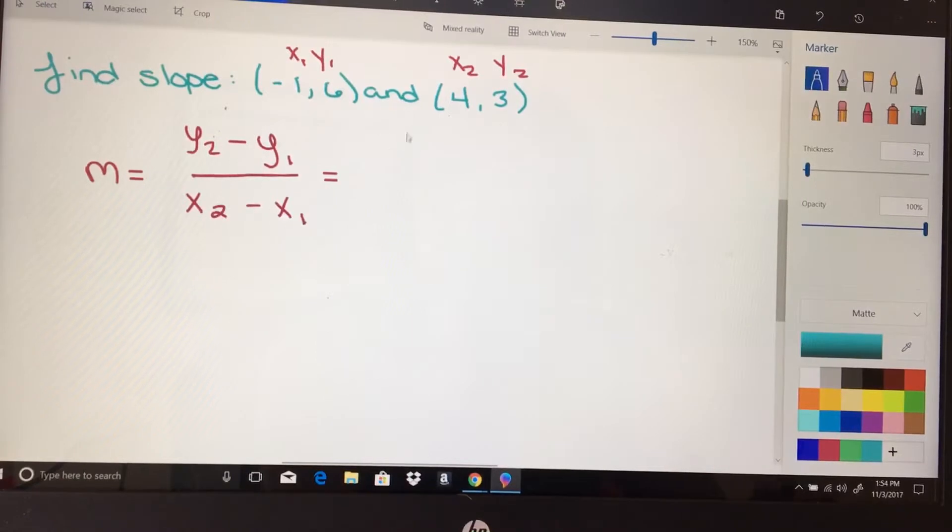So we're going to get a y2, which is 3, minus a y1, which is 6, over an x2, which is 4, minus an x1, which is negative 1.